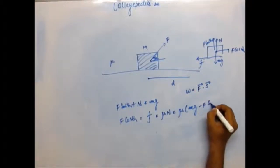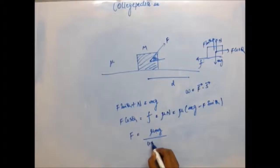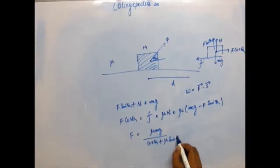Normal reaction from here we get Mg minus F sin θ. So from here we can easily get what F is. We can write F as μ times Mg upon cos θ plus μ times sin θ.